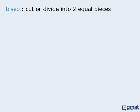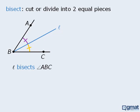Here's another definition. To bisect is to cut or divide something into two equal pieces. For example, let's say we take an angle and draw a line that splits the angle into two angles. If those two angles are equal, which we can denote as follows, then we can say that line L bisects angle ABC, or we can say that line L is the bisector of angle ABC.